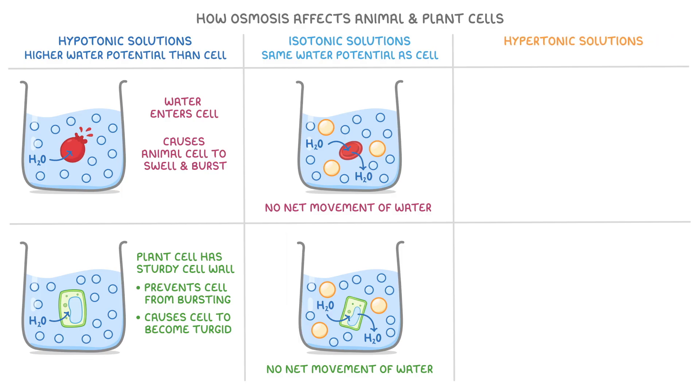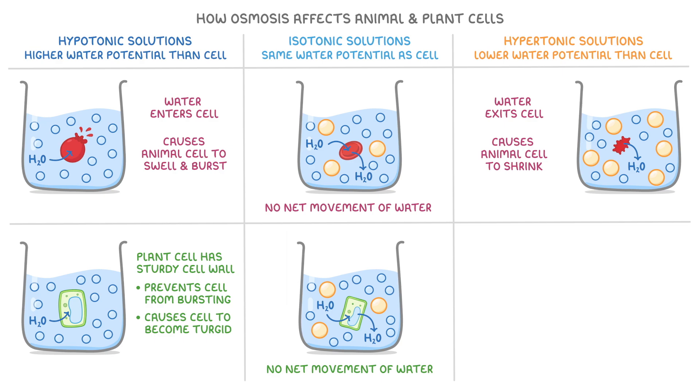Finally then, we have hypertonic solutions, which have a lower water potential than the cell. So if we place this animal cell in a hypertonic solution, water exits the cell by osmosis, from an area of higher water potential inside the cell, to an area of lower water potential outside the cell, and this causes the animal cell to shrink.